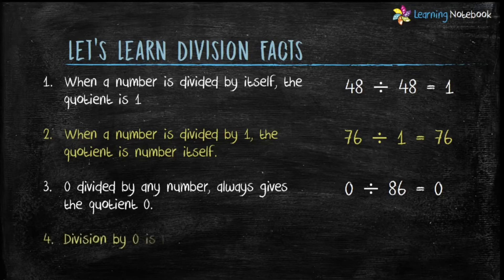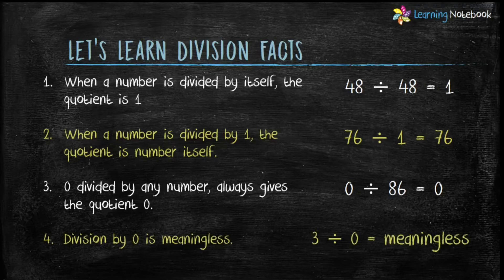Fourth division fact is, division by 0 is meaningless. For example, 3 divided by 0 is meaningless. Similarly, 19 divided by 0 is also meaningless.